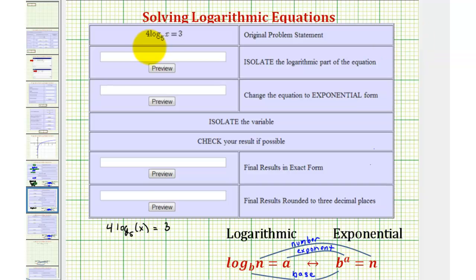We want to solve the log equation four times log base five of x equals three. To solve a log equation, we first want to isolate the logarithm and then write the log equation as an exponential equation to solve for x.